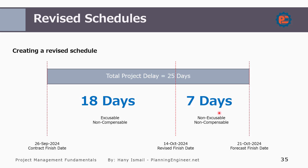This means the contractor has the right to an extension of time of 18 days, but no additional cost will be assigned because on top of those 18 days, the contractor has an additional seven days of non-excusable, non-compensable delay. This means a delay penalty can be applied to the contractor for that seven-day portion.